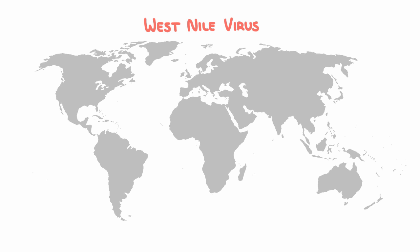The name West Nile probably makes you think of somewhere in northeastern Africa. And indeed, West Nile virus was discovered in the West Nile region of Uganda. But in 1999, West Nile arrived in New York, and since then has marched west, so that it's now well-established in our country.